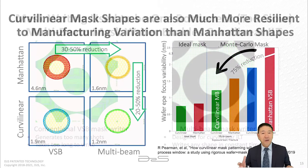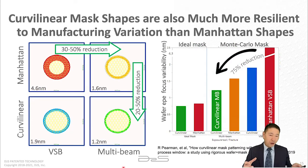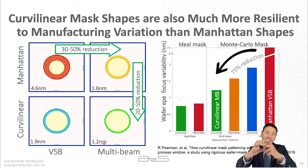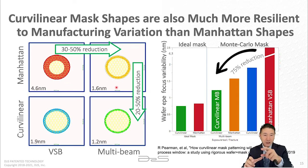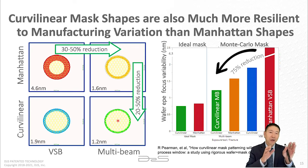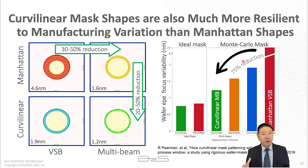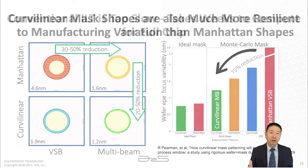Using curvilinear mask patterns has a whole range of benefits beyond ILT itself. Dr. Ryan Perman from D2S showed that for printing contacts, changing from a square shape to a curvilinear circular shape and switching from a VSB mask writer to a multi-beam mask writer can reduce wafer variability by 75% — which is very significant.